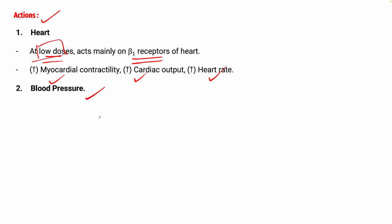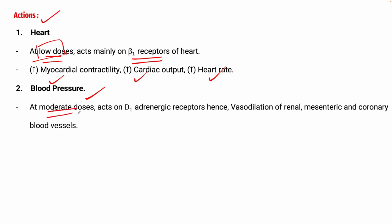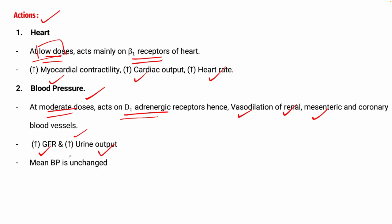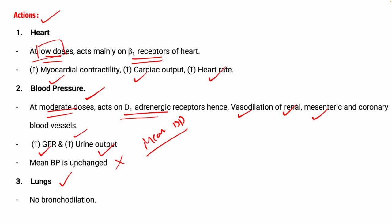At a moderate dose, dopamine generally acts on D1 dopaminergic receptors, causing vasodilation of renal, mesenteric, and coronary blood vessels. This leads to an increase in GFR and urine output. The mean blood pressure — measured after systolic and diastolic — remains unchanged. There is no bronchodilation since dopamine mainly acts on beta-1, and bronchodilation is a property of beta-2 receptors.